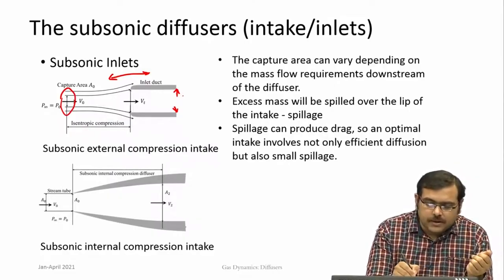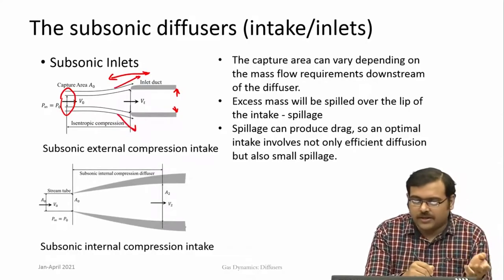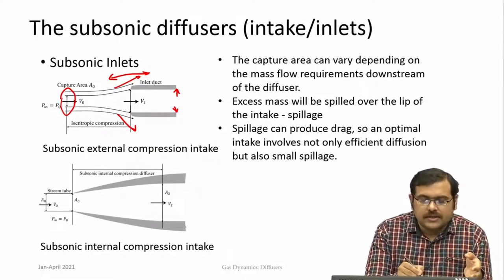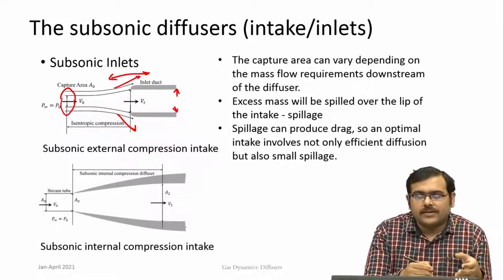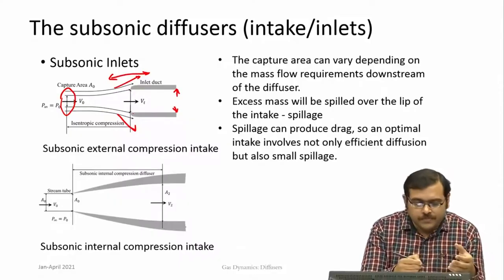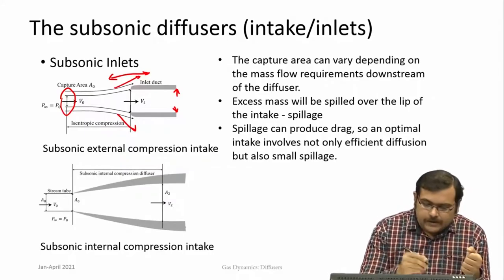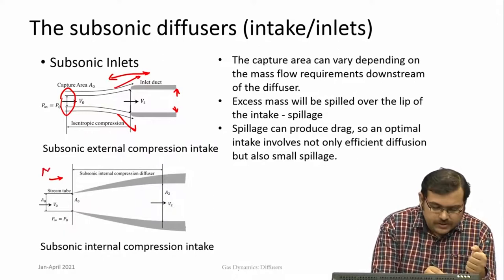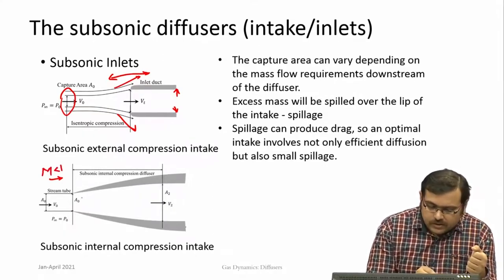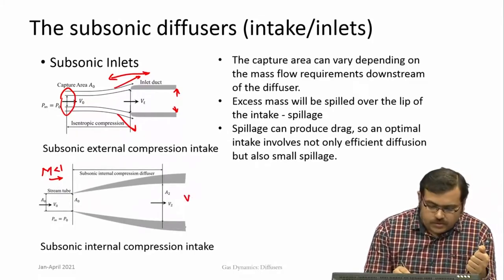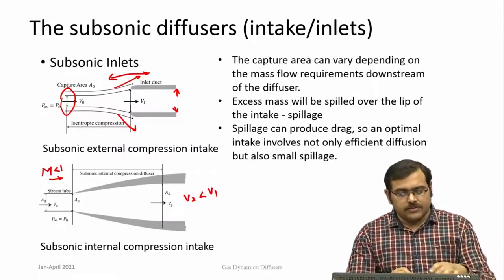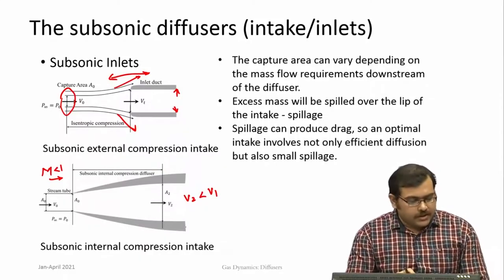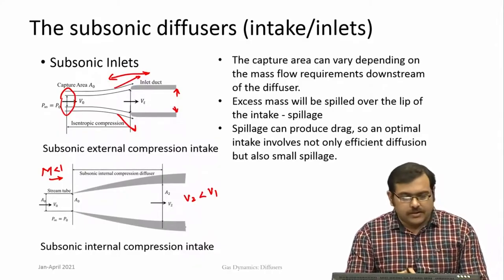If the mass required by the engine is smaller, then a lot of mass spills over the intake. This spillage over the lip causes additional drag. So when considering flows over an intake, it is not only about how much pressure recovery or diffusion you can achieve, but also how much mass flow you can capture and what the smallest possible drag should be. With a divergent duct and incoming subsonic flow (M < 1), the duct diffuses the flow so V₂ is less than V₁ — this is internal compression.